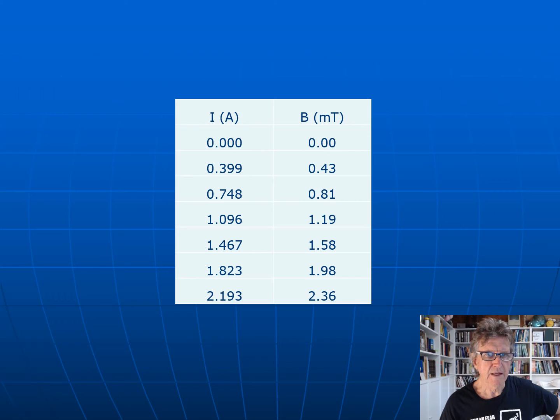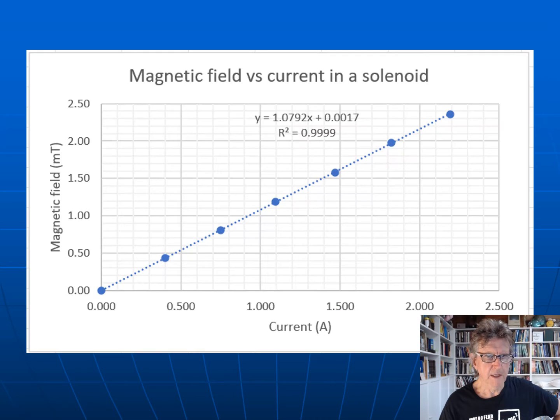You can see it's looking fairly linear when you think about it. We're going here 0.4 of an amp, it's about 0.4 milli Tesla. I go up to almost double that and I'm getting almost double the strength of the magnetic field. So let's plot that and see how we go.